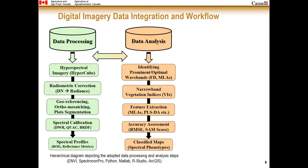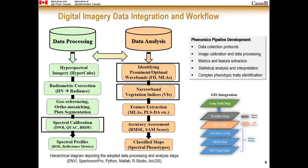Here is the detailed imagery data integration and analysis workflow, divided into two parts: data processing and data analysis. In data processing, the hyperspectral image cube undergoes radiometric correction, followed by georeferencing, ortho-mosaicking, and plot segmentation, then spectral calibration to extract spectral profiles. In data analysis, we identify the prominent optimum wave bands, which allow selection or development of vegetation indices for feature extraction, followed by accuracy assessment and extraction of spectral phenotypes. Different layers of remote sensing, soil survey, and climate models are stitched together in ArcGIS, and the phenomics pipeline covers data collection protocols, image calibration, data processing, feature extraction, statistical analysis, and interpretation.